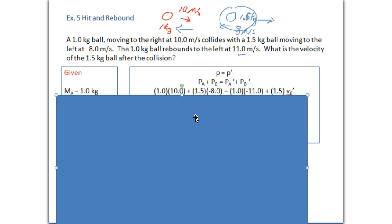So here, work your math out. 1 kilogram times 10 meters per second plus 1.5 kilogram ball moving at 8 meters per second to the left. And remember, that's your negative here. Ball A rebounds. Goes negative 11 meters per second. Mass hasn't changed. Mass of ball B hasn't changed. We just don't know its velocity.